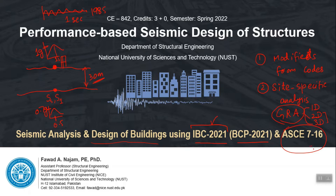We also have ASCE 7-22, but I will be using ASCE 7-16 along with IBC 2021. All of this discussion is also applicable to the Building Code of Pakistan because they are now essentially the same. I will highlight some differences, and the hazard parameters will be taken from BCP, but the science of structural analysis and design is the same — only the numbers are replaced with Pakistan-specific values where required.